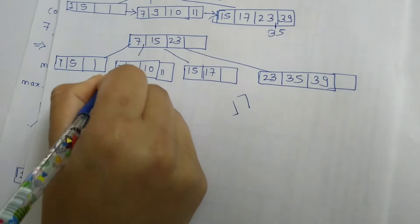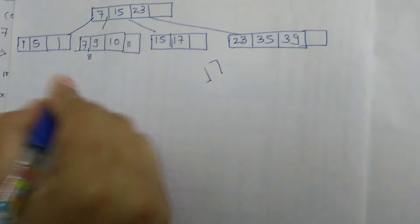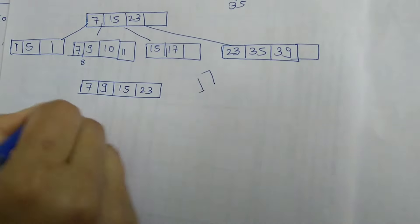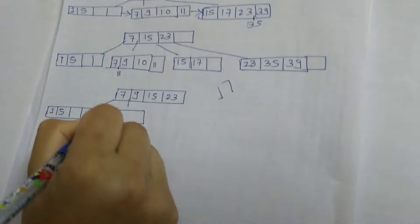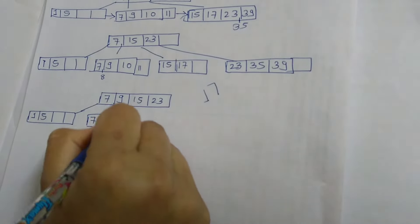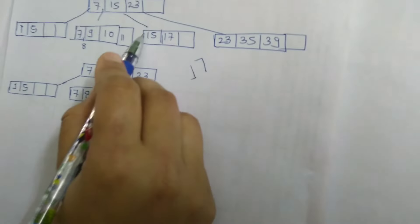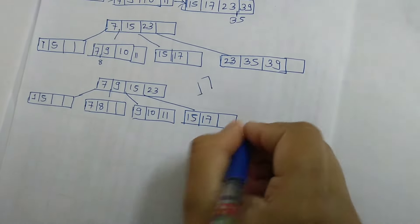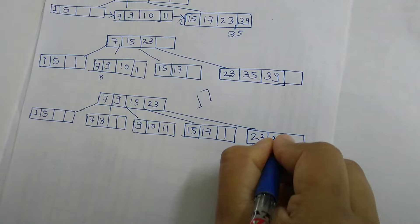The next element is 8. The position of 8 is after 7 in that leaf node, but there is no space. So one key must go up — the middle element of that node is 9. The root becomes 7, 9, 15 and 23. Left of 7 is 1 and 5; right of 7 is 7 and 8; right of 9 is 9, 10 and 11; right of 15 is 15 and 17; right of 23 is 23, 35 and 39.